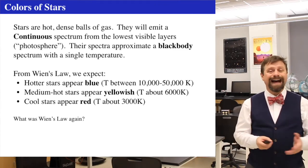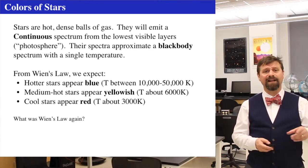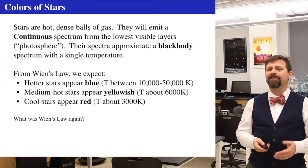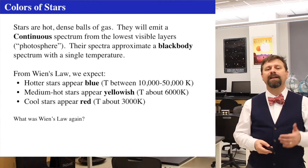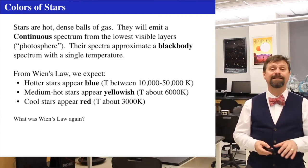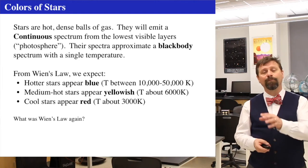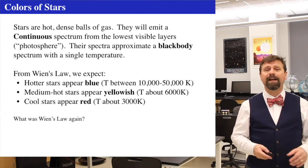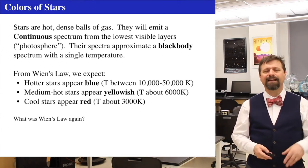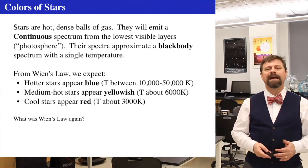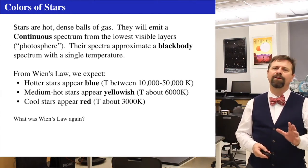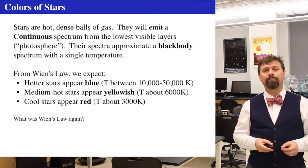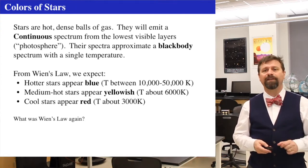Stars are huge, hot, and dense like the sun. The sun is a million times bigger in volume than the Earth and about a hundred Earth diameters across. Anything that's really hot and really dense emits a continuous spectrum. The continuous spectrum comes from the photosphere, the lowest visible layers of the star, and that spectrum is really close to a black body, which can be described with a single temperature.